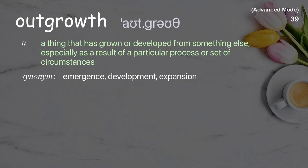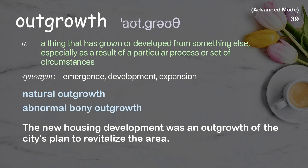Outgrowth: a thing that has grown or developed from something else, especially as a result of a particular process or set of circumstances. Examples: natural outgrowth; abnormal bony outgrowth. The new housing development was an outgrowth of the city's plan to revitalize the area.